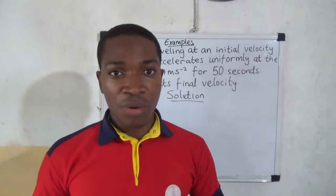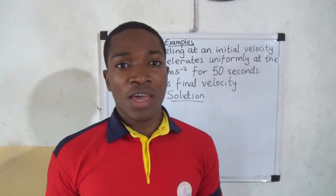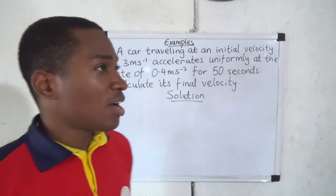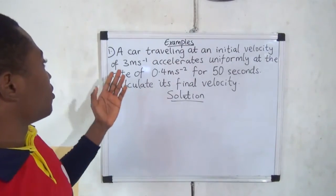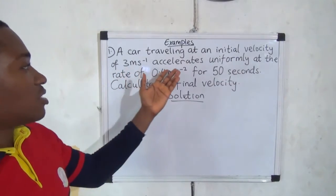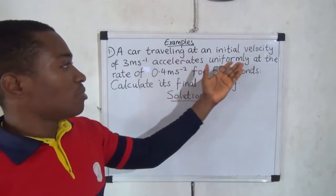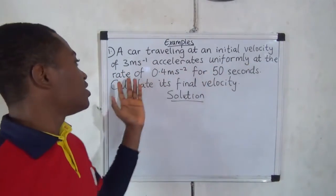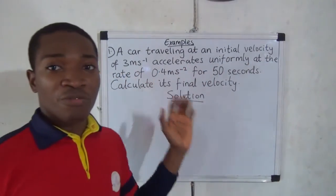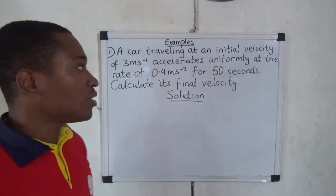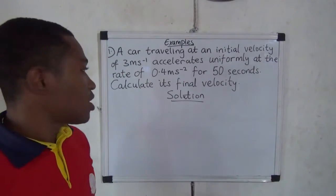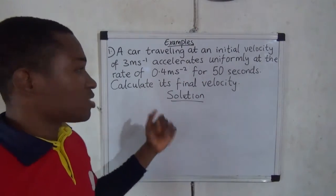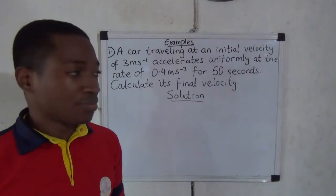Let's solve some examples. Example number one: A car traveling at an initial velocity of 3 meters per second accelerates uniformly at the rate of 0.4 meters per second squared for 50 seconds. Calculate its final velocity.